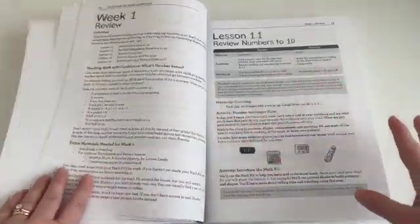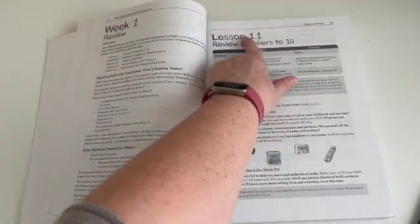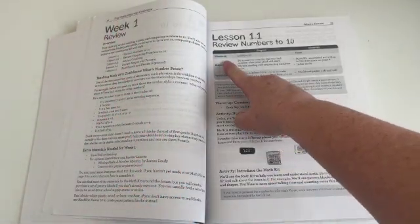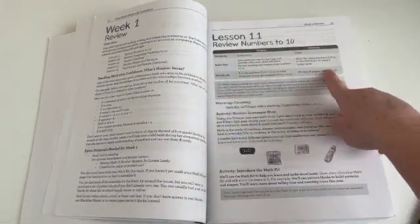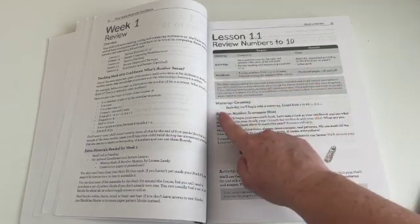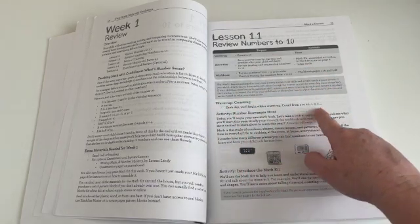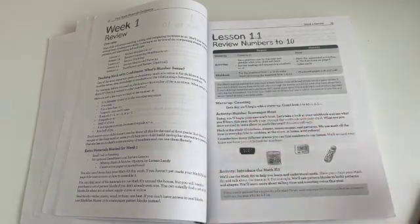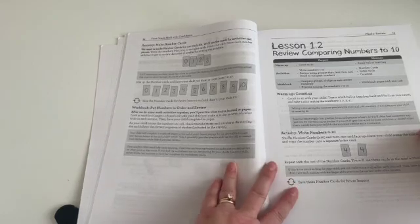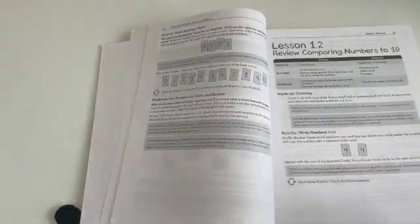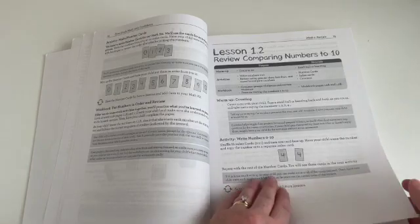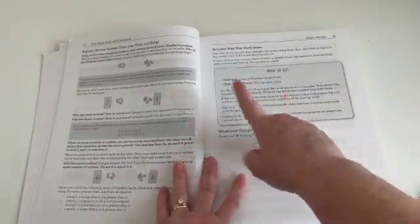Then we've got week one. It always gives us an overview of what your child will be learning each day of the week and any extra materials you might need. And then here we jump into the actual lesson. So notice it says lesson 1.1. So this is the first week, the first day. I love this because it gives us a little breakdown of what our lesson is going to look like. So we're going to have the warmup activities and workbook. For today's warmup, we'll be counting from one to 20. Then we're going to do a number scavenger hunt. Like how fun is that? And then we're going to introduce the math kit and make number cards and play a little game. And then we're going to do our workbook page. So as you can see, it's very hands-on.